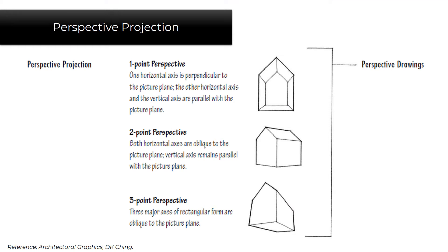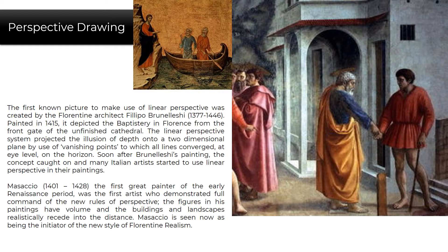We move on to perspective projection. It is divided into different types: one point perspective, where one horizontal axis is perpendicular to the picture plane and the other horizontal axis and vertical axis are parallel with the picture plane; two point perspective, where both horizontal axes are oblique to the picture plane and the vertical axis remains parallel; and three point perspective, where three major axes of rectangular form are oblique to the picture plane. The first known picture to use linear perspective was created by the Florentine architect Filippo Brunelleschi. The first great painter of the early Renaissance period demonstrated full command of the new rules of perspective. The smaller image represents art before perspective and the bigger image represents art after its discovery.